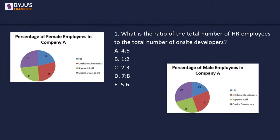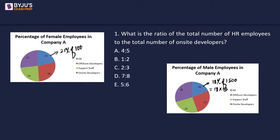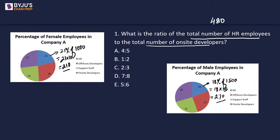The first question asks: what is the ratio of total HR employees to total on-site developers? Total male HR employees = 18% of 1500 = 18 × 15 = 270. Total female HR employees = 21% of 1000 = 21 × 10 = 210. So total HR employees = 270 + 210 = 480.